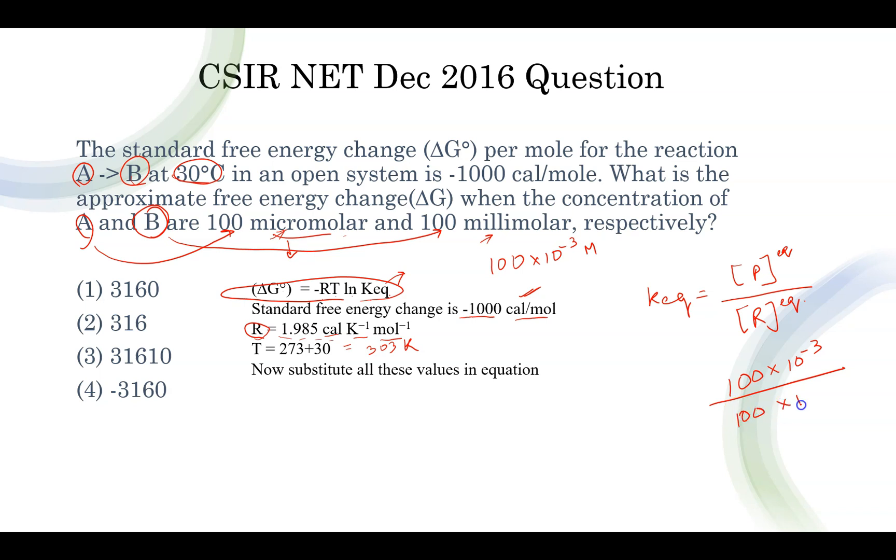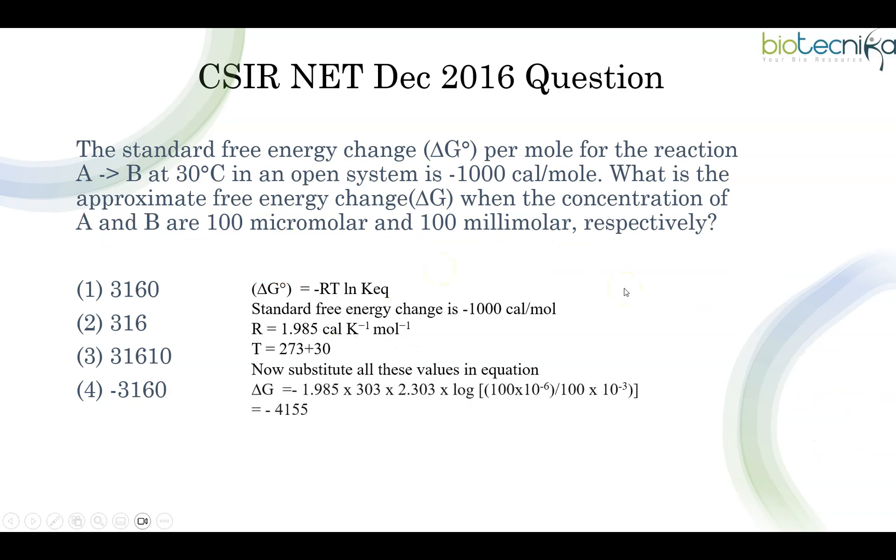You can write it over here 100×10⁻³ divided by reactant. Reactant is A and A concentration is 100 micromolar, 100×10⁻⁶ molar. Now that we have brought both in the same unit, 100 gets cancelled. So 10⁻³ you can raise it to the numerator where it will become 10³. Now this 10³ you are supposed to put it in this particular equation. Substituting all these values in the equation we will have to take minus also, there is a minus, don't forget that.